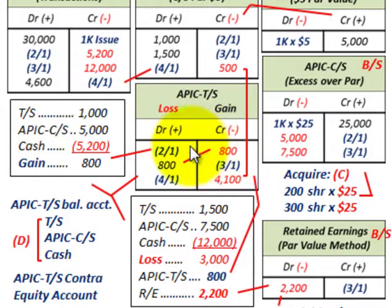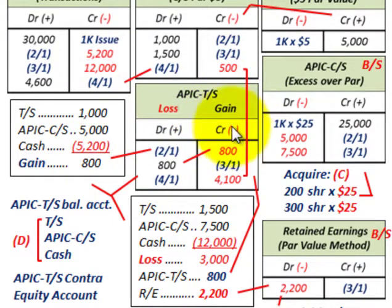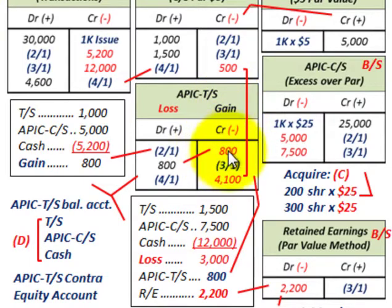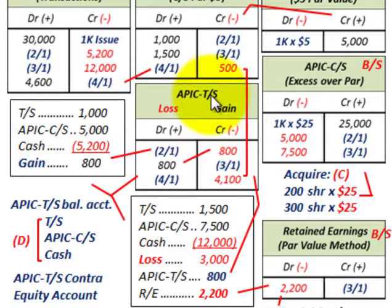That $800 is a gain. Any gains go to additional paid-in capital for treasury stock — you credit additional paid-in capital for any gains. Even though it's a reduction to the additional paid-in capital treasury stock account, because it's a contra equity account, a credit represents a gain. In this case, the gain was $800.